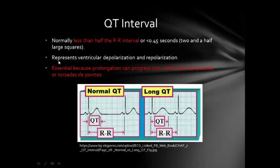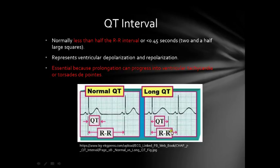The fifth thing is the QT interval. Normally the QT interval is less than half of the RR interval — measured from the Q wave to the end of the T wave. It should be less than half the distance between R and R. There is another criterion of less than 3.45 seconds, but this method is easier. A long QT is particularly important to pick up because it can predispose to ventricular tachycardia or torsades de pointes, both of which can lead to sudden death.